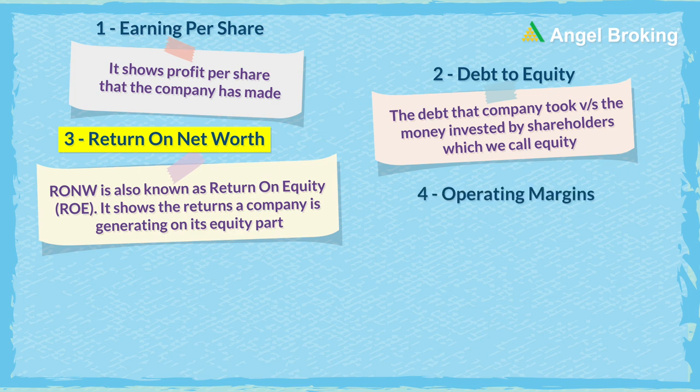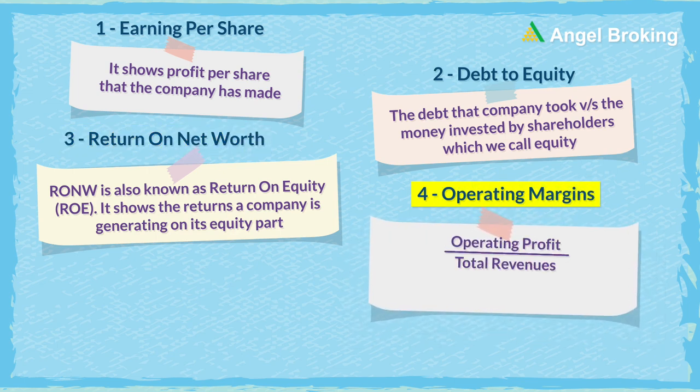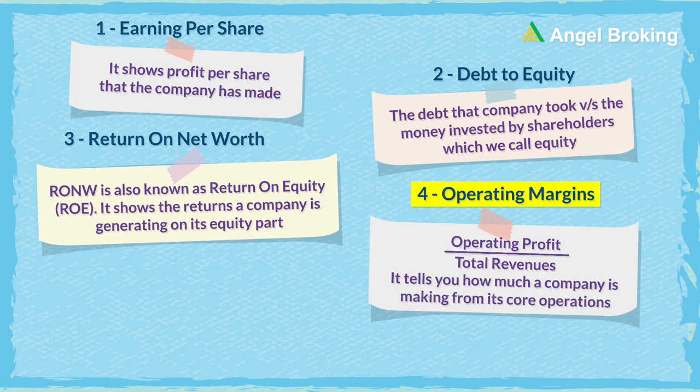Another key ratio is Operating Margins. Just divide operating profit by the total revenue and you get operating margins. It tells you how much a company is making from its core operations.